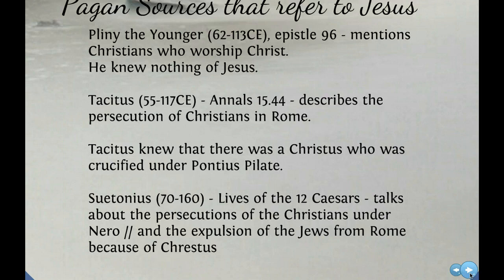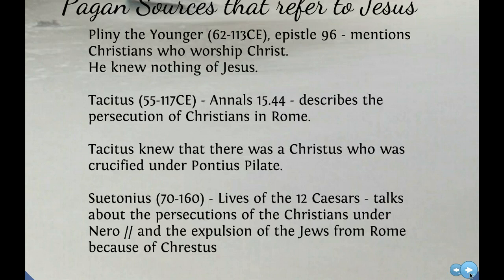They were a small religion that followed a crucified man, and crucifixion is the lowest way to die. There is no glory in Christianity. But eventually Christianity gained a lot of momentum as time went by. Tacitus did not talk about Christians all that much. Suetonius, in his Lives of the Twelve Caesars, talks about the persecutions of the Christians under Nero and the expulsions of the Jews from Rome because of Christus - and Christus is not Christ, it's a different person.